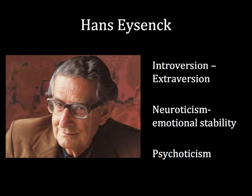An introvert is quiet, solitary, and reserved, preferring to avoid new experiences. In contrast, an extrovert is sociable and outgoing, preferring to search out stimulating environments. The second dimension is the spectrum between neuroticism and emotional stability — the extent to which a person is predisposed to become emotionally upset (neurotic) or remain emotionally even (stable).